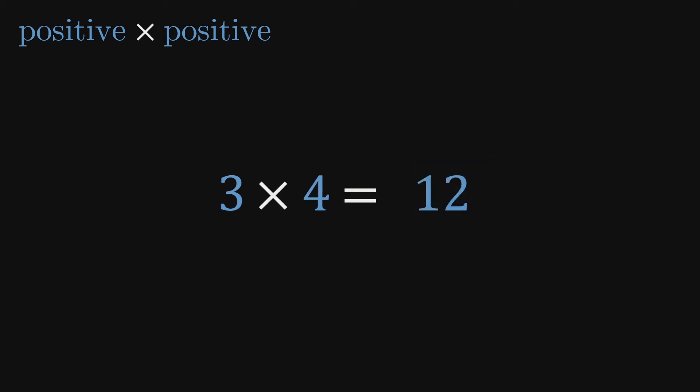Since multiplication is commutative, changing the order of the numbers we're multiplying has no effect on the result. That is, we can write 3 times 4 as 4 times 3 and think of it as four groups of 3.